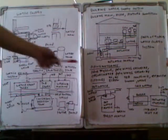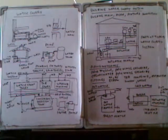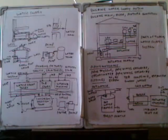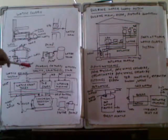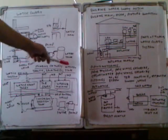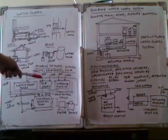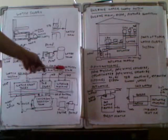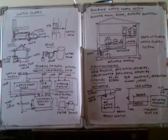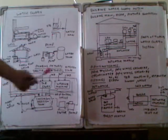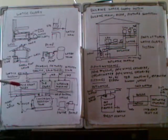This is the building water supply system. In the building water supply system, water is provided for the kitchen, shower, lavatories, and sinks. This is for the domestic water supply system.